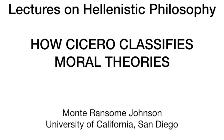Let's review briefly what he says about these other theories. Beginning with the non-moral theories, he distinguishes three kinds. Beginning with Aristippus — what does Aristippus take the highest good to be? Pleasure. That's not a tough question. He takes pleasure, and only pleasure; it's essentially the only good for him.